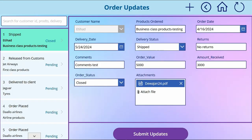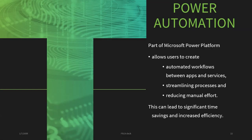Using this app, you can review existing orders, modify them, update them, and or create a new order. Power Apps can be integrated with Power Automate, another Power Platform tool that allows users to create automated workflows between apps and services, streamlining processes and reducing manual effort.